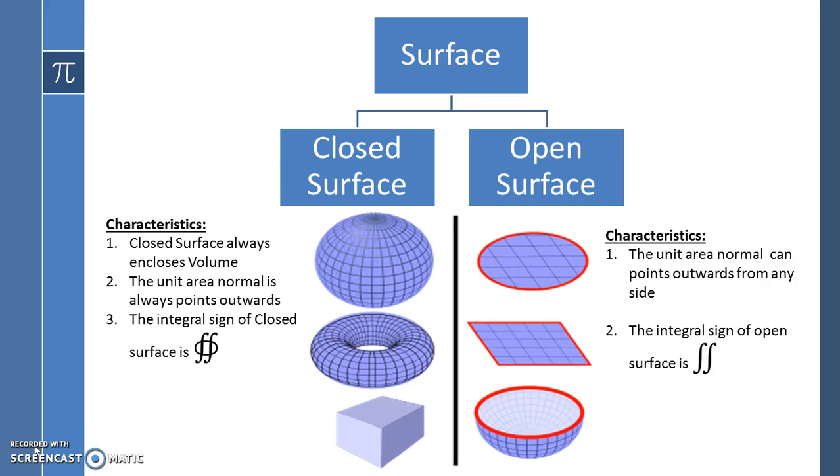The characteristics of the open surface: the unit area normal can point outwards from any one side. The integral sign does not have any circle on it.